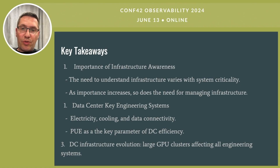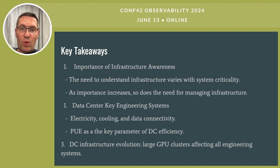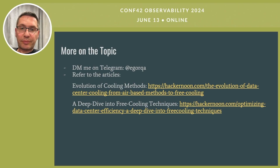To wind up, let's quickly go through today's takeaways. The three pillars of any data center are electricity, cooling, and connectivity. We had a virtual tour of data center electricity infrastructure, made an overview of DC cooling technologies with special focus on free cooling, and briefly covered data center servers including GPUs. But if you take away only one thing from today's talk, let it be this: the more critical your system is, the deeper your infrastructure awareness should be. Hope this short data center infrastructure tour was useful. If you're interested in any of the topics discussed, especially free cooling, you're welcome to contact me directly or refer to my articles on Hacker Noon. Thank you very much.